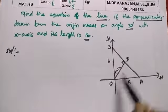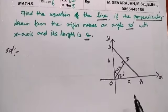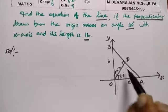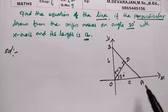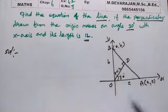The perpendicular from the origin makes a 30-degree angle with the x-axis, and its length is P.